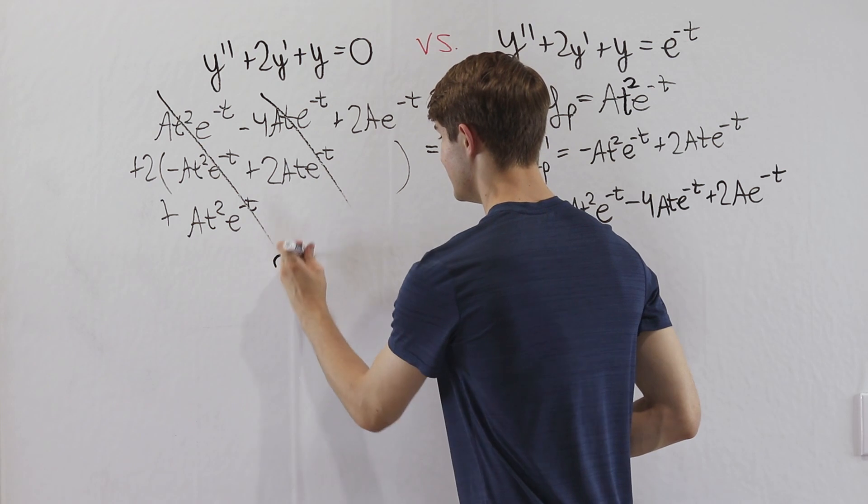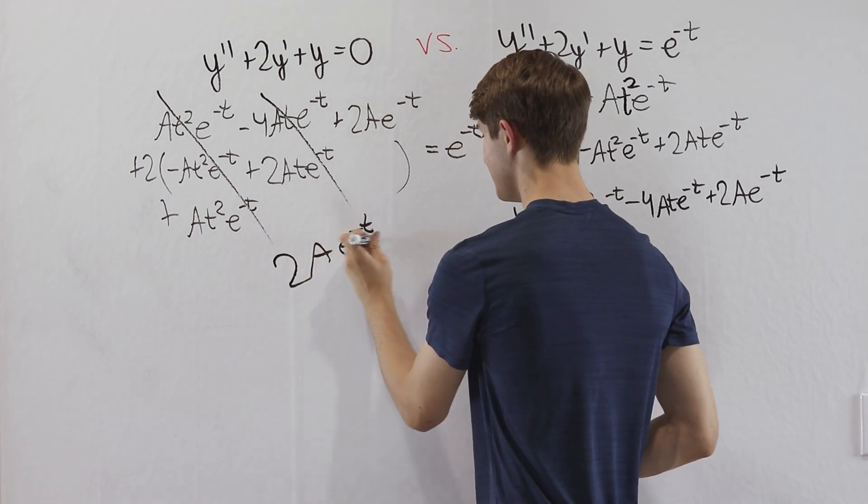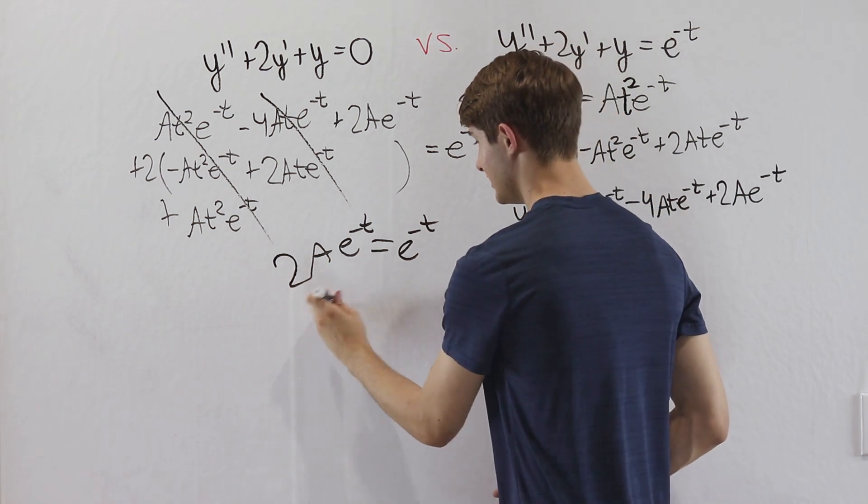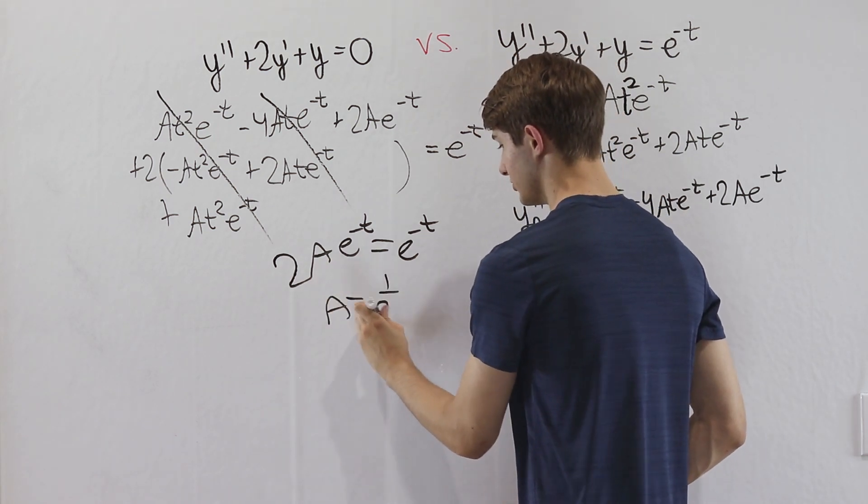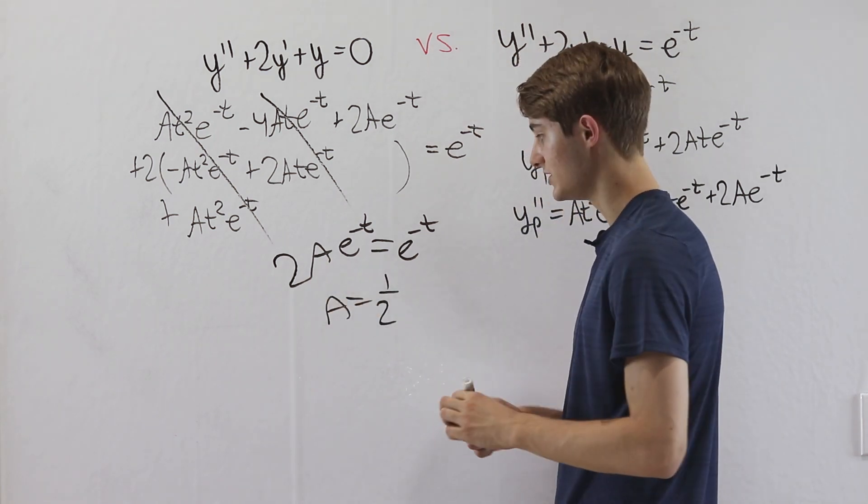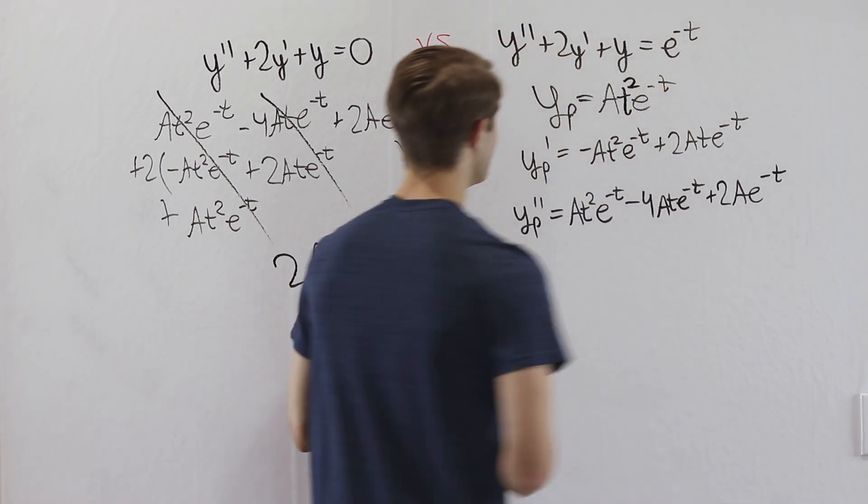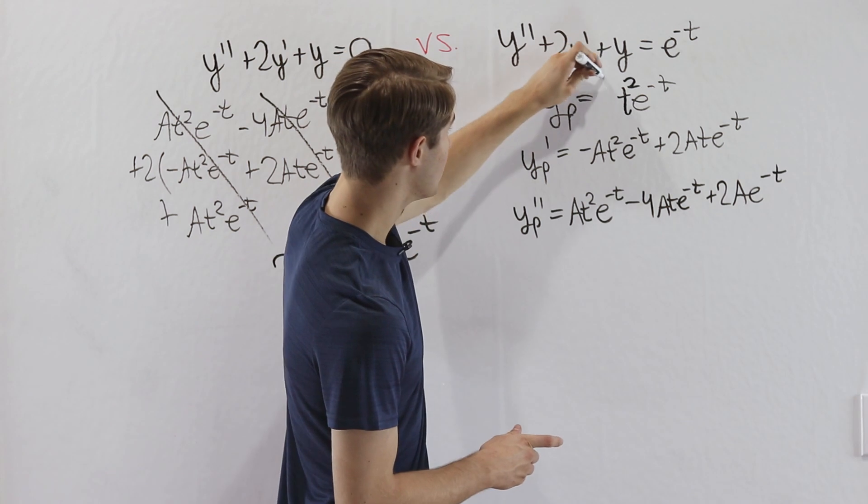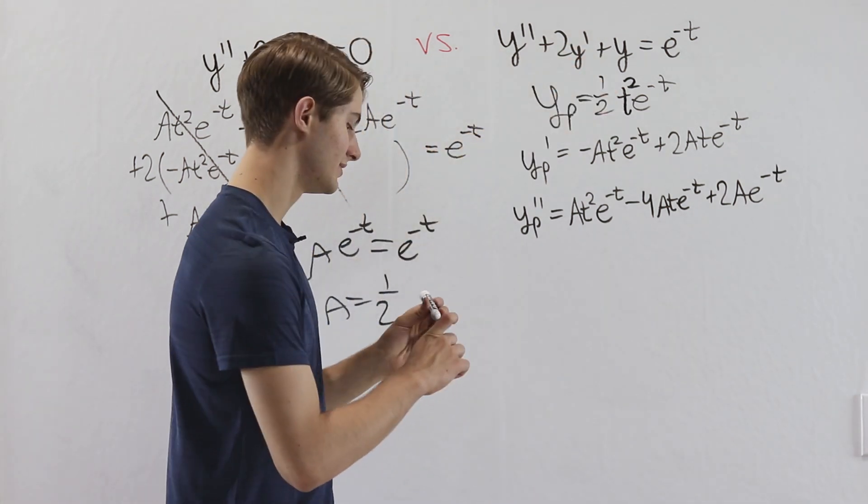We're left with 2 a e to the negative t equals e to the negative t. And of course, we can solve this. That's just going to give us a equals 1 half. And that is the only constant we need in this case. So we can go back to our particular solution and say that it is 1 half t squared e to the negative t.